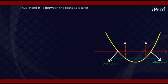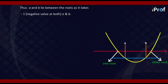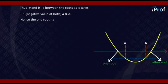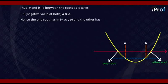Thus a and b lie between the roots, and the function takes negative values at both a and b. Hence one root lies between -∞ and a, and the other root lies between b and ∞.